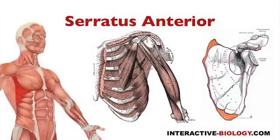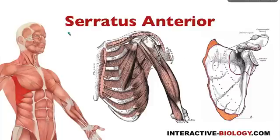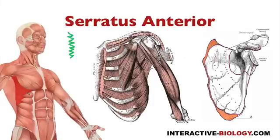Here you can see serratus anterior. As I mentioned in one of the previous videos, when we're talking about serrations, if you're dealing with a serrated knife, you're dealing with something that has a tooth-like or saw-like appearance. So that's a convenient name for this muscle. If we look here, we can see those tooth-like projections, kind of like the blade of a knife.